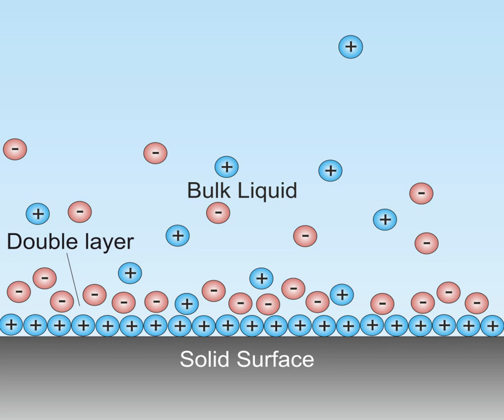The IHP passes through the centers of these molecules. Specifically adsorbed, partially solvated ions appear in this layer. The solvated ions of the electrolyte are outside the IHP. Through the centers of these ions pass the OHP. The diffuse layer is the region beyond the OHP.